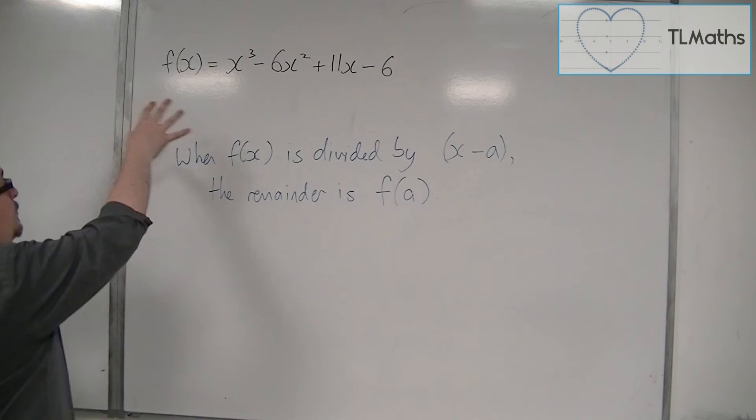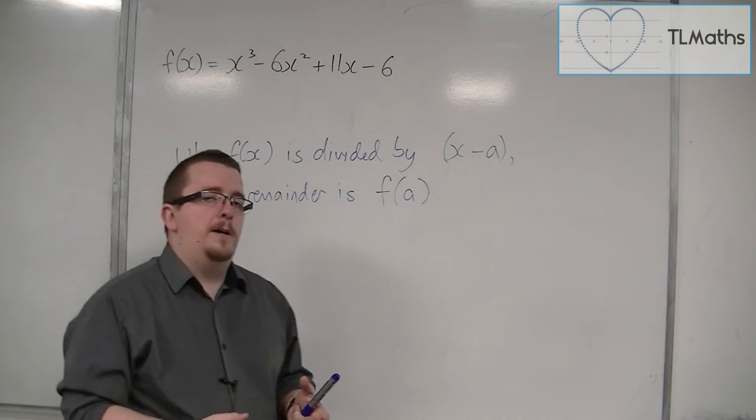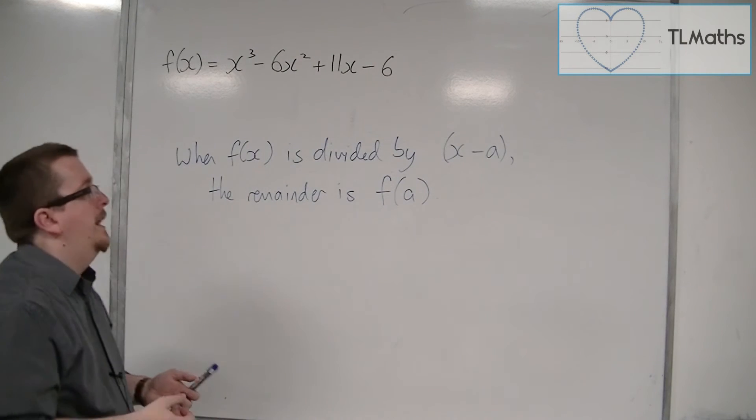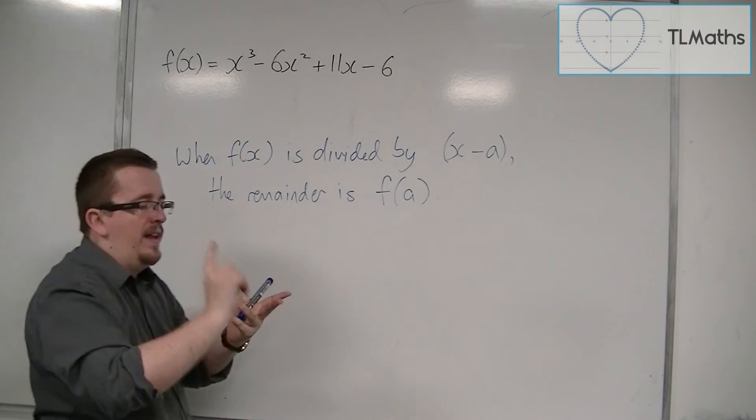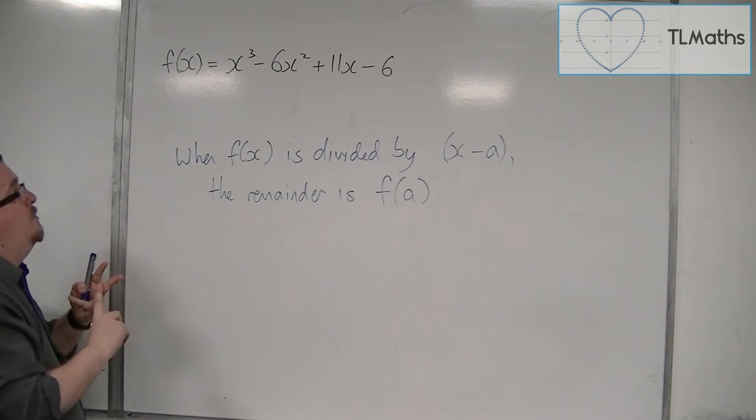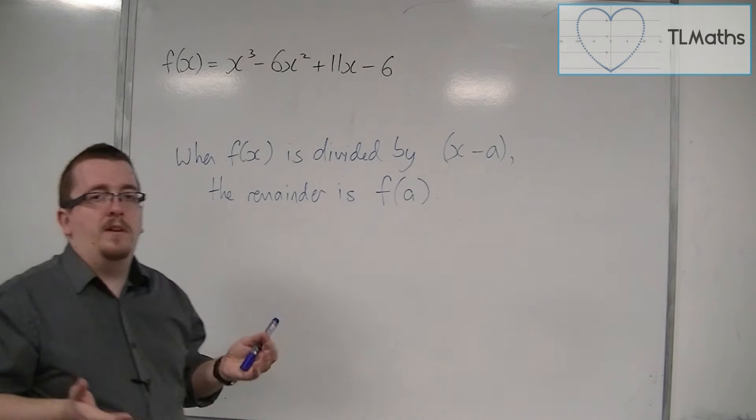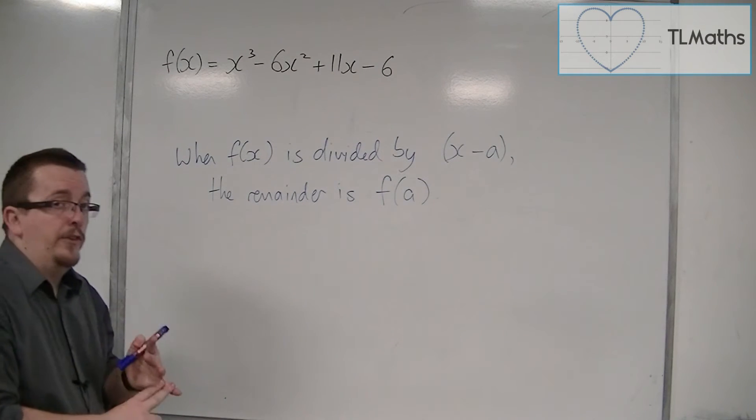So if this was my f(x), let's choose a number. We know that the factors from previous videos are (x-1), (x-2), and (x-3). So if I substitute in 1, 2, or 3, I know I'm going to get 0. Let's think about substituting in -1.